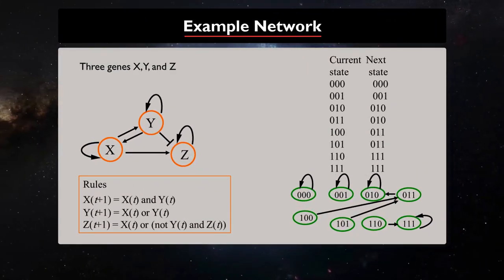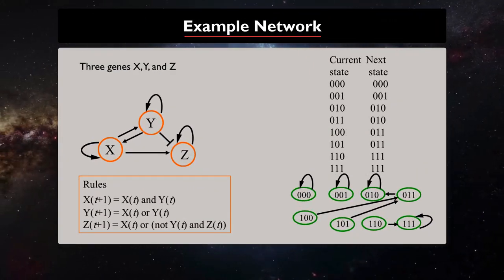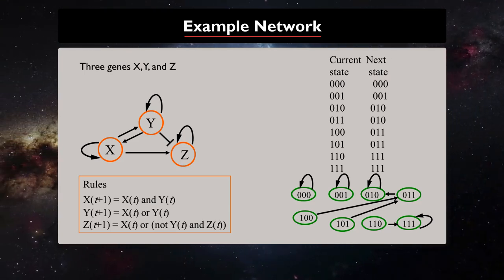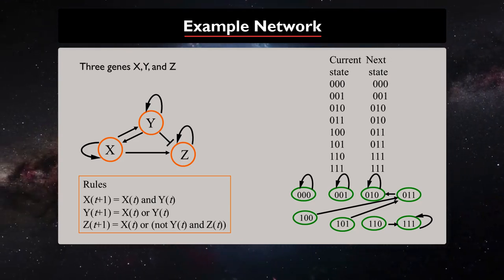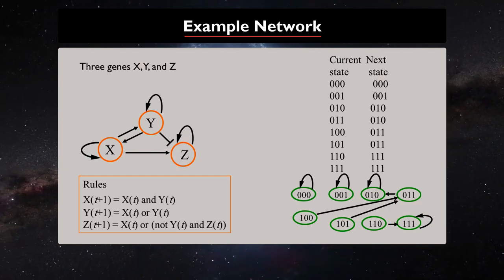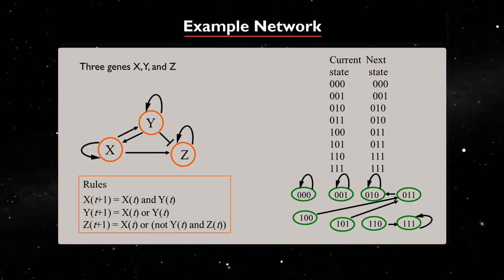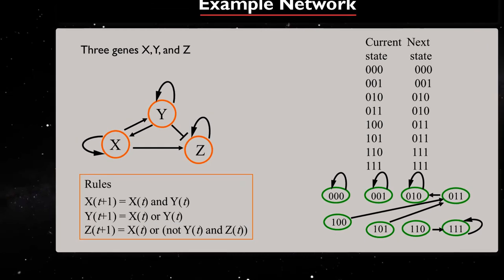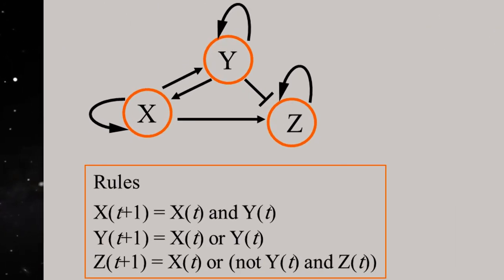Let's consider a 3-gene system. It's a discrete dynamical system, so we need state variables and a set of rules. It's a 3-gene network, so we have 3 state variables: x, y, z.